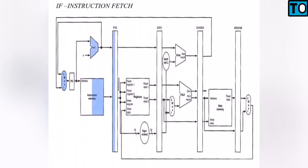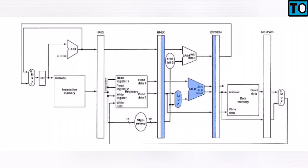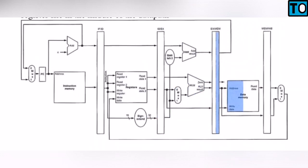This is the first step. In the instruction memory, you can read, then you can write. You can read the register, then you can write. This is the ALU operation and the execution stage. The read and write is on the register. The execution operation is on the ALU.